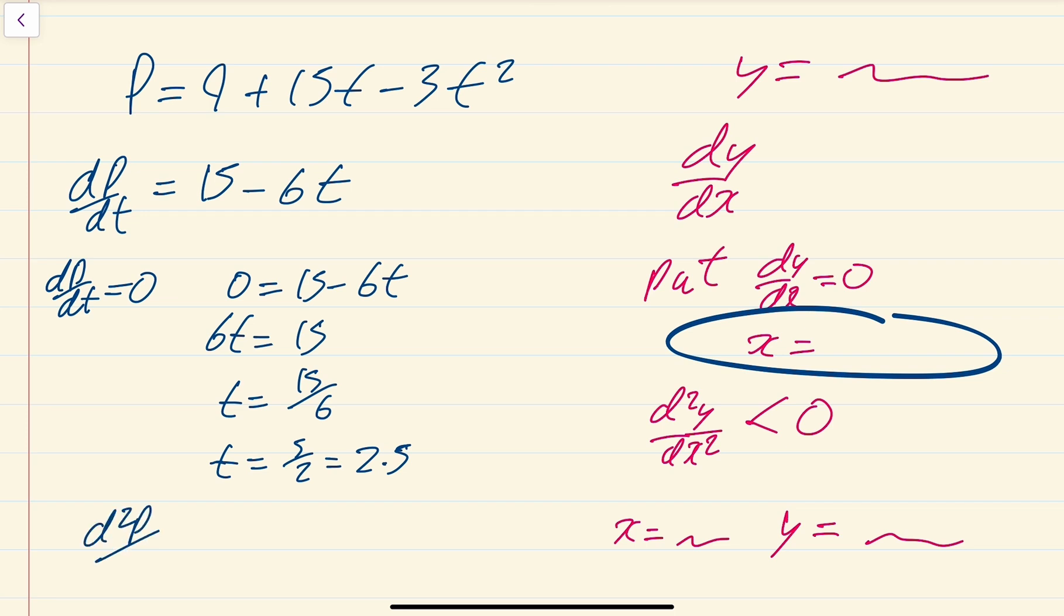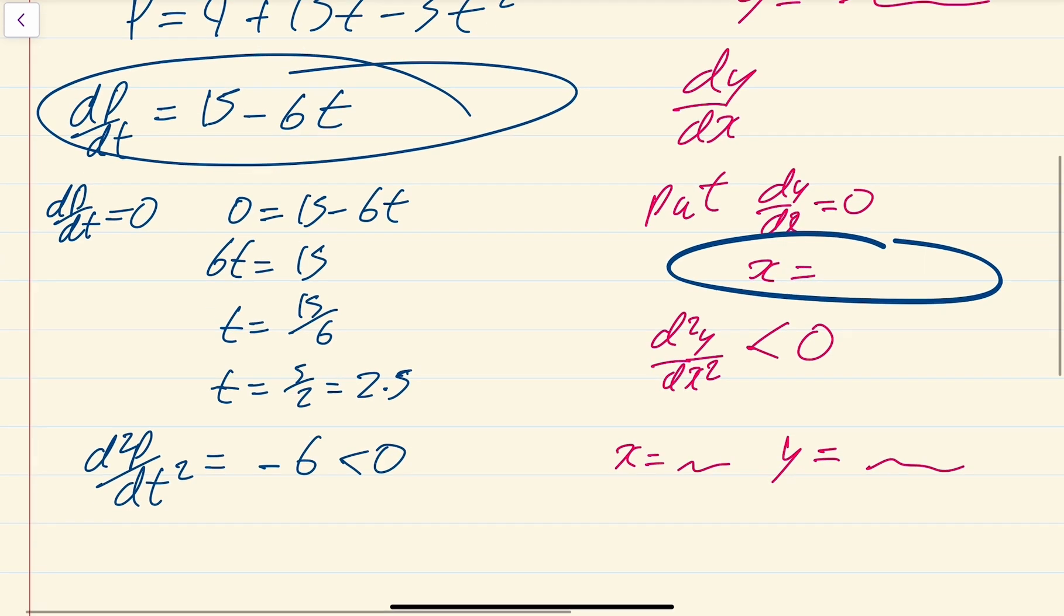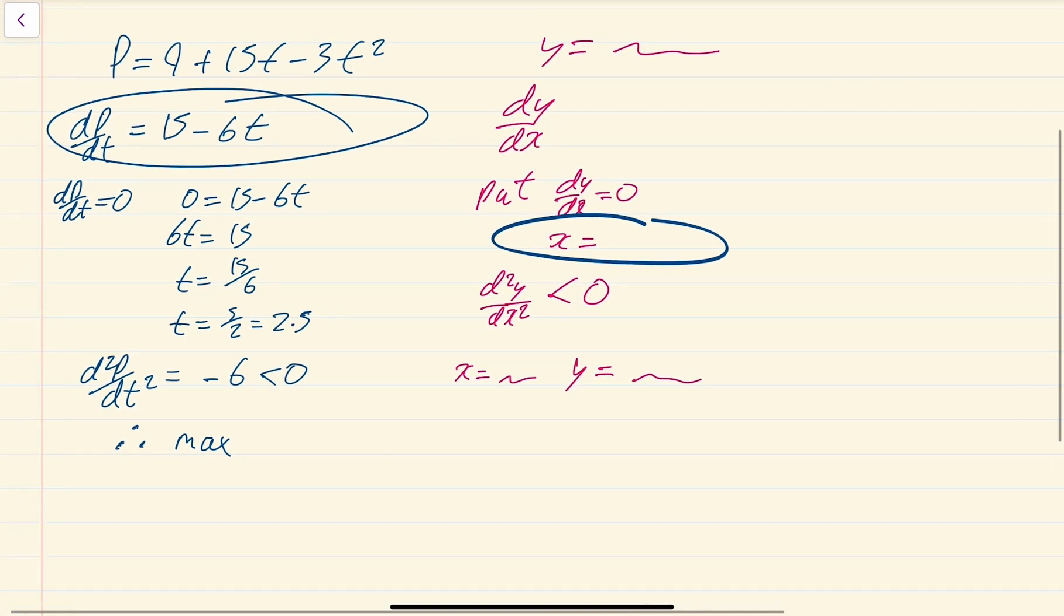Find d²p/dt². If you differentiate dp/dt you get -6, which is less than zero, therefore we have proved it's a maximum. This bit is essential - you can't just say it is a maximum, you have to do the d²p/dt² test. Then we need to find the corresponding P value.